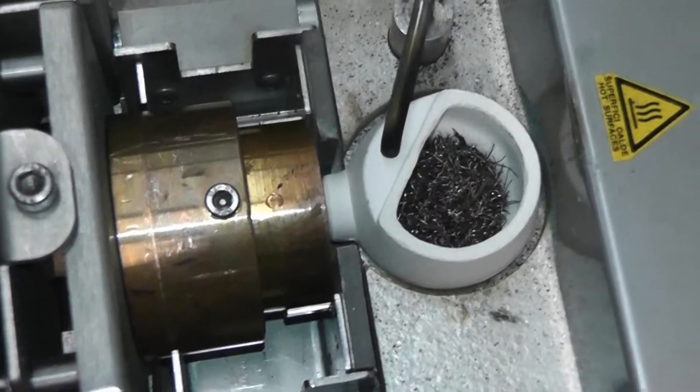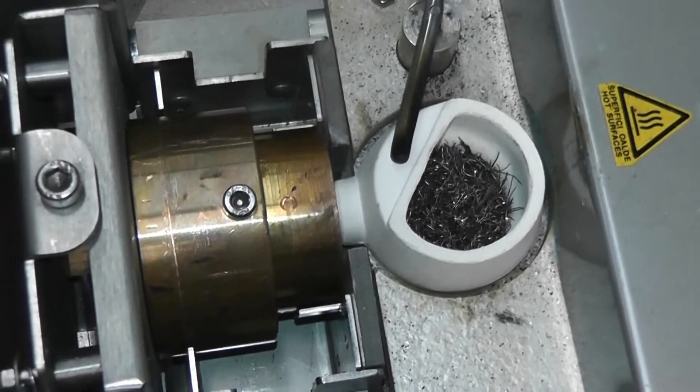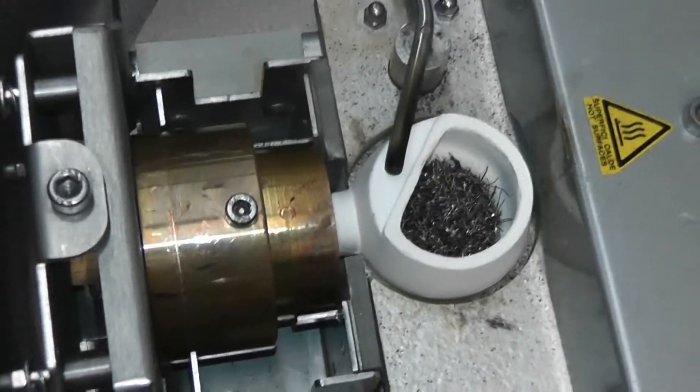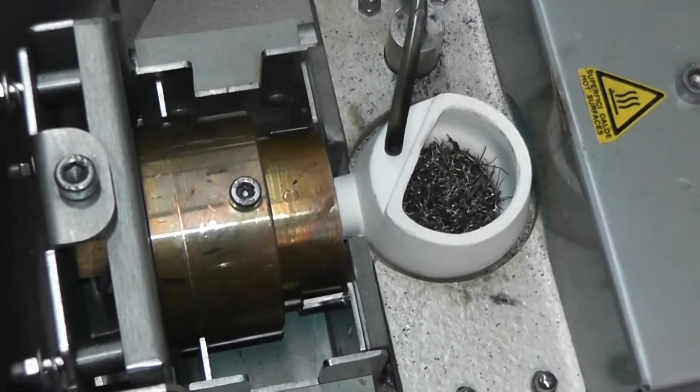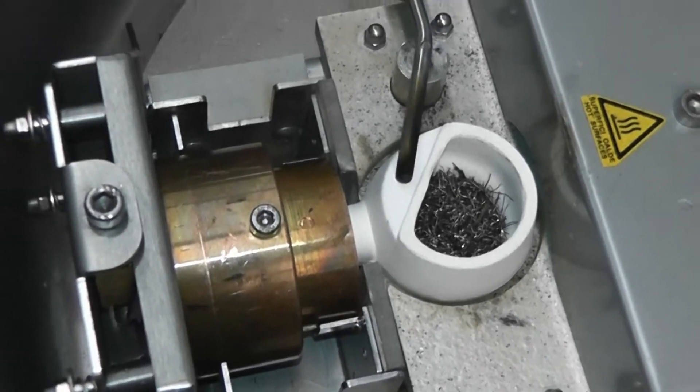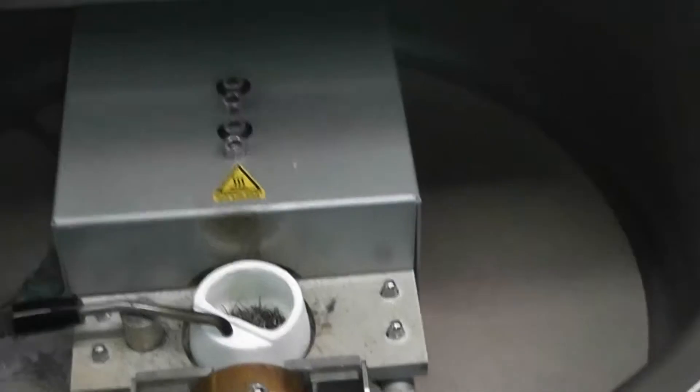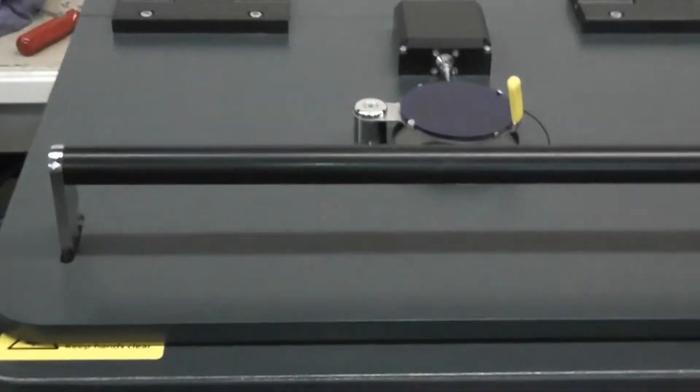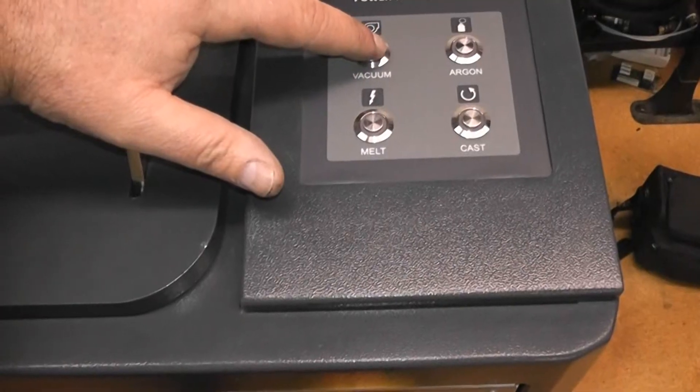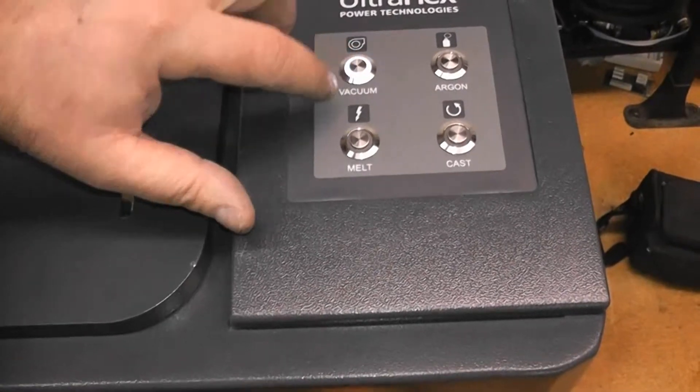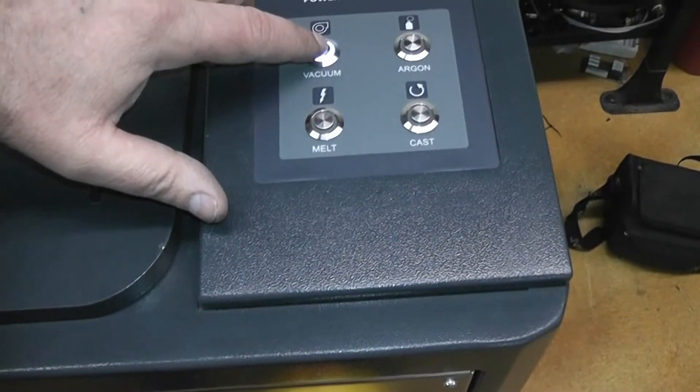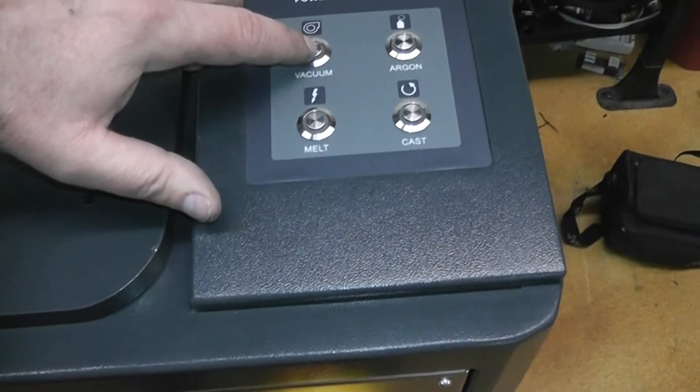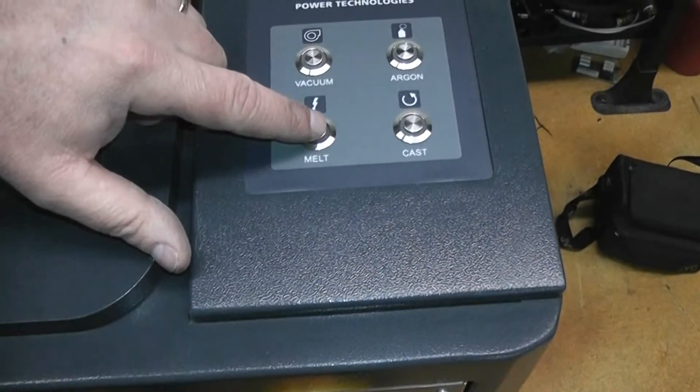The material has been compressed and has been loaded into the centrifugal arm along with the ingot mold. We will now close the lid and pull a vacuum. The vacuum is now being pulled. Now that we have a vacuum, we are going to press power to start the melt.